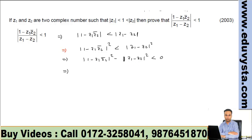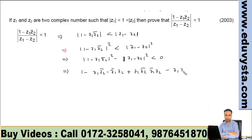We can simply expand both expressions. The expansion gives: 1 minus z1 z2 conjugate minus z1 conjugate z2 plus z1 z2 conjugate times z1 conjugate z2, minus z1 z1 conjugate minus z2 z2 conjugate minus z1 z2 conjugate minus z1 conjugate z2.